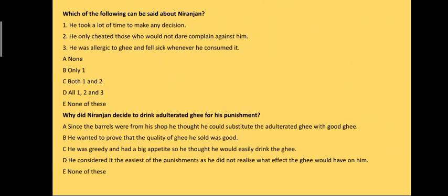Which of the following can be said about Niranjan? Options: he took a lot of time to make any decision; he only cheated those who would not dare complain against him; he was allergic to ghee and fell sick whenever he consumed it. The answer is none of these — that is option E. Some children might think the answer is option A, that he took a lot of time to make any decision, because Niranjan took time deciding which punishment to take. But that is not the case in every time in his life, so the answer is none of these, option E.